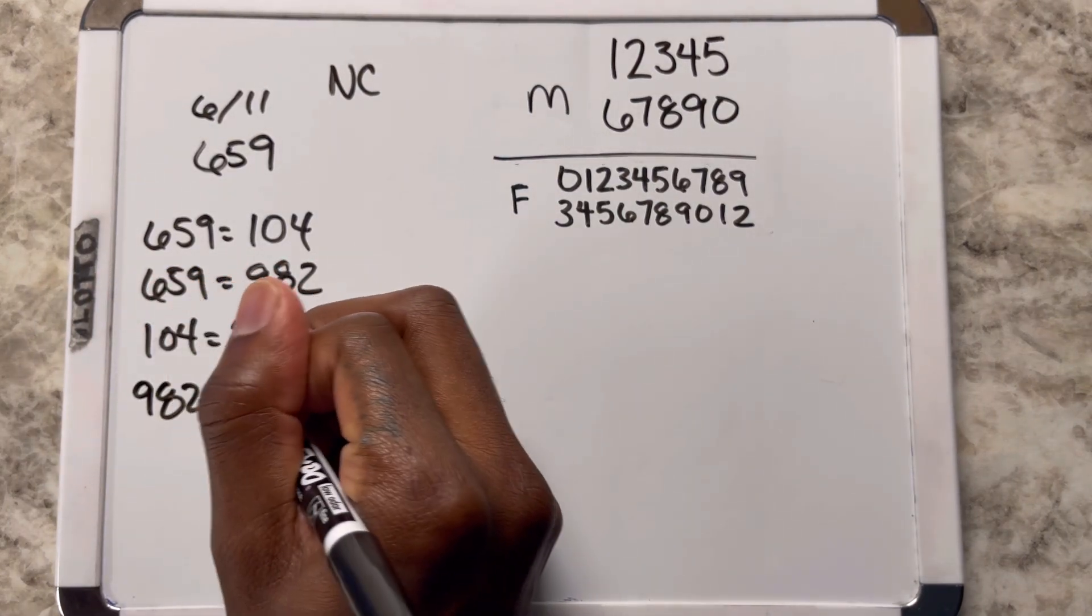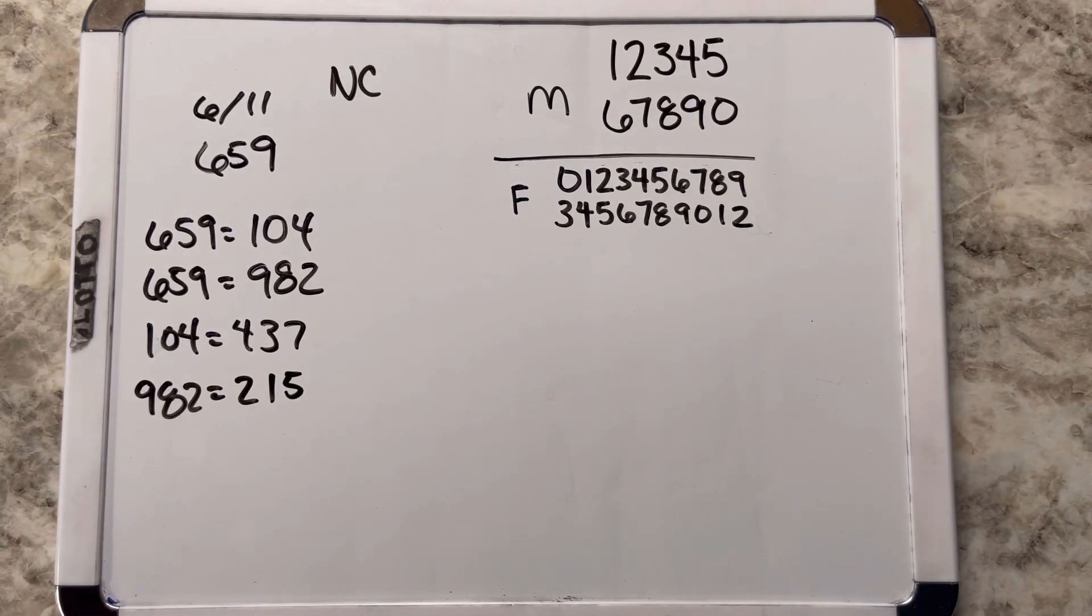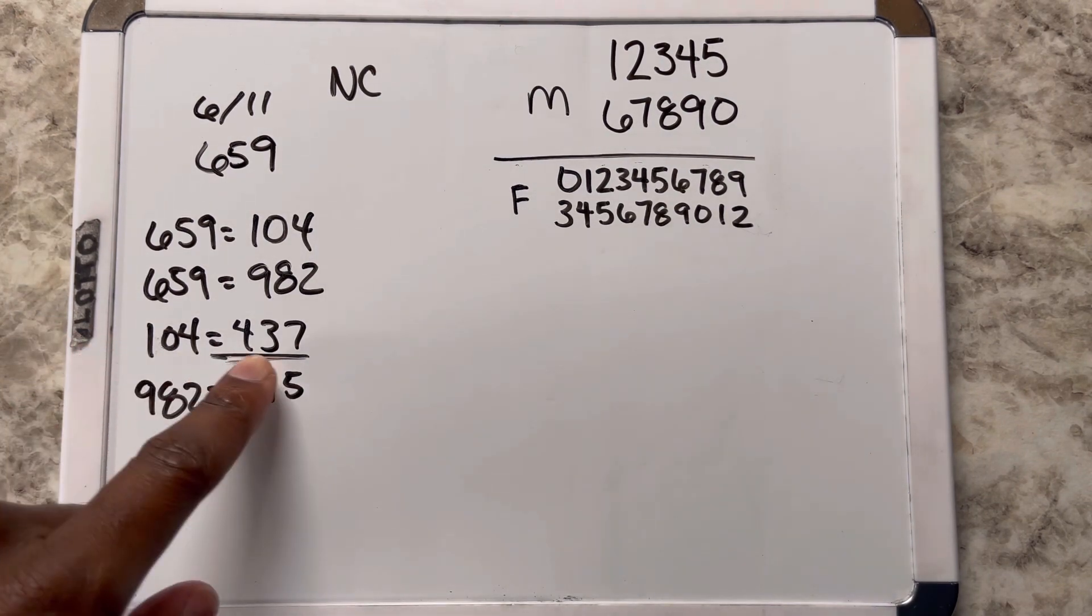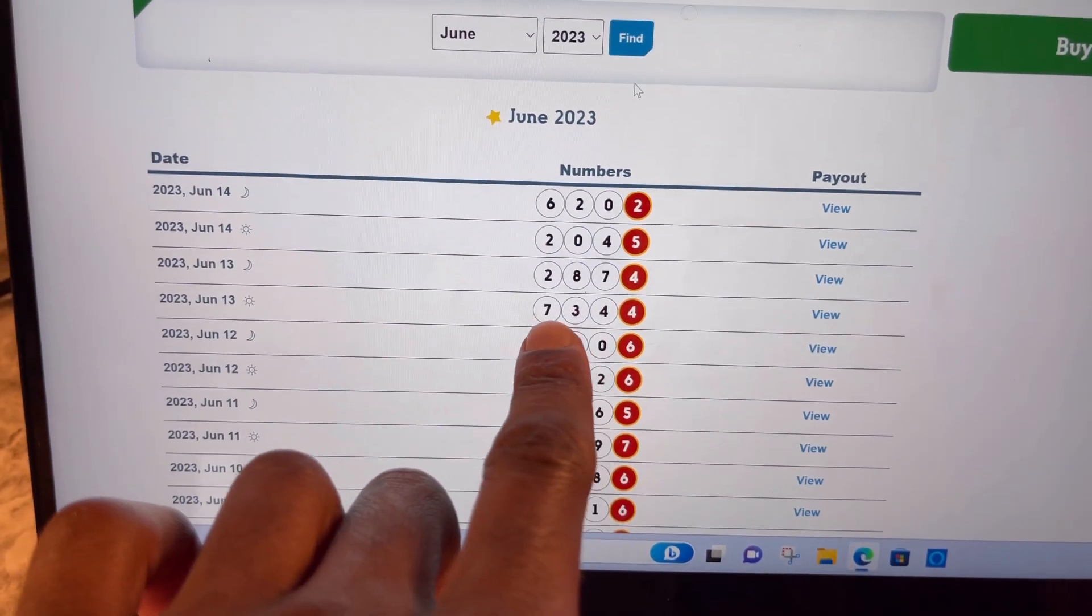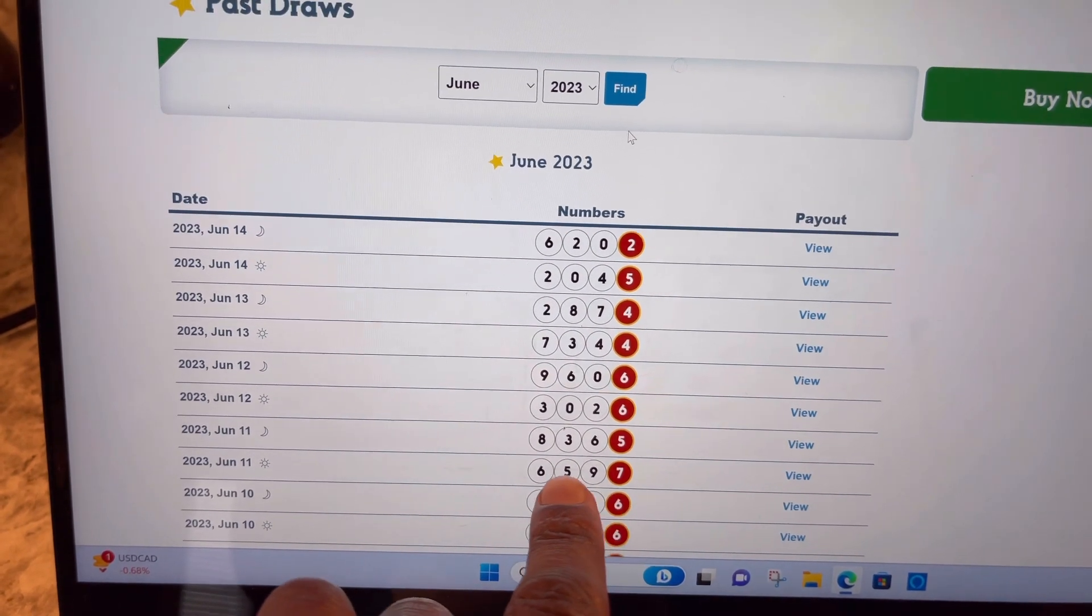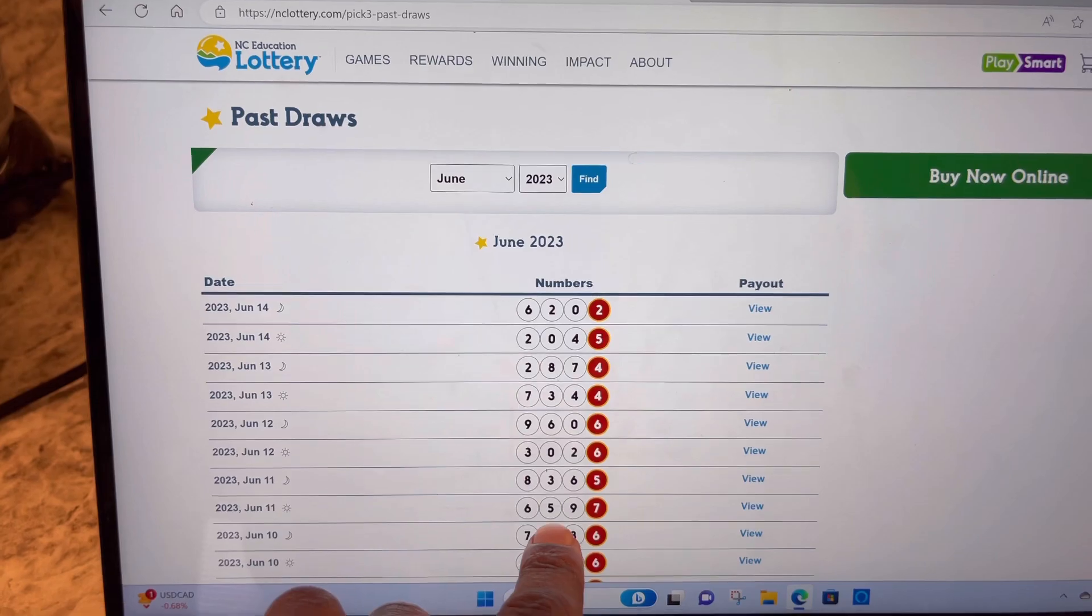Real quick, let me look at y'all numbers. Got 302 that came out, 960, 734, 287, 204, and 620. Right here, that number came out. If you was to do this workout and you played this number for like two days, 734, you would have hit because 734 came out. See, 734, and the number that I used was 659. So 734 came in two days later.